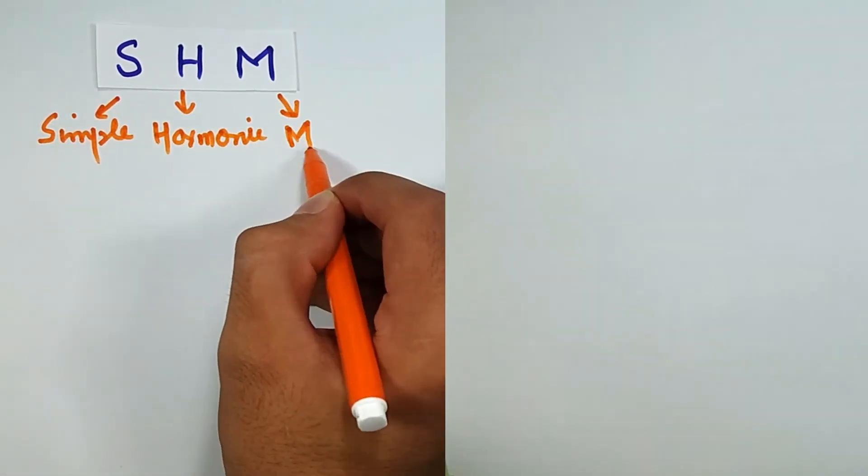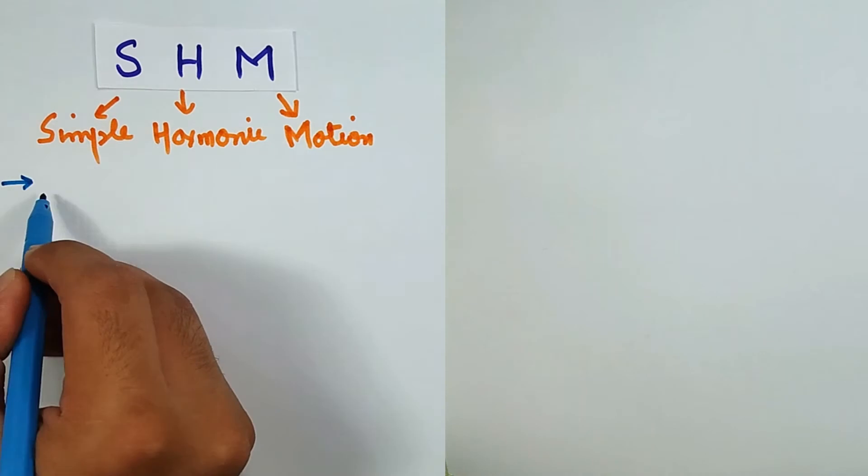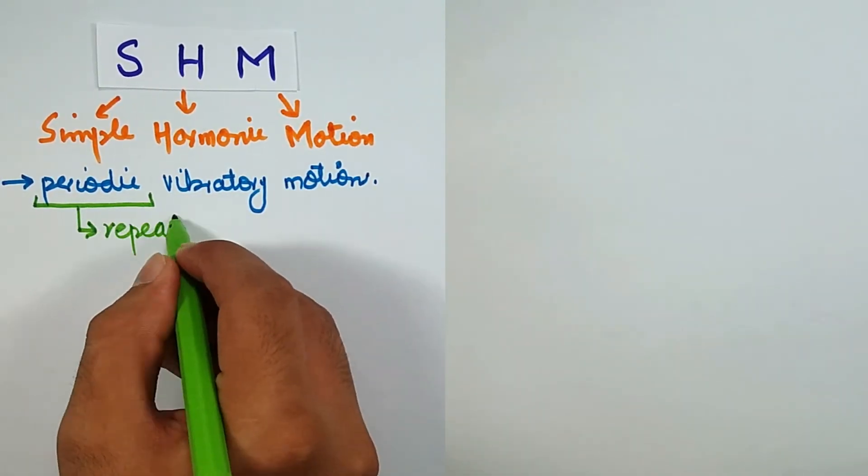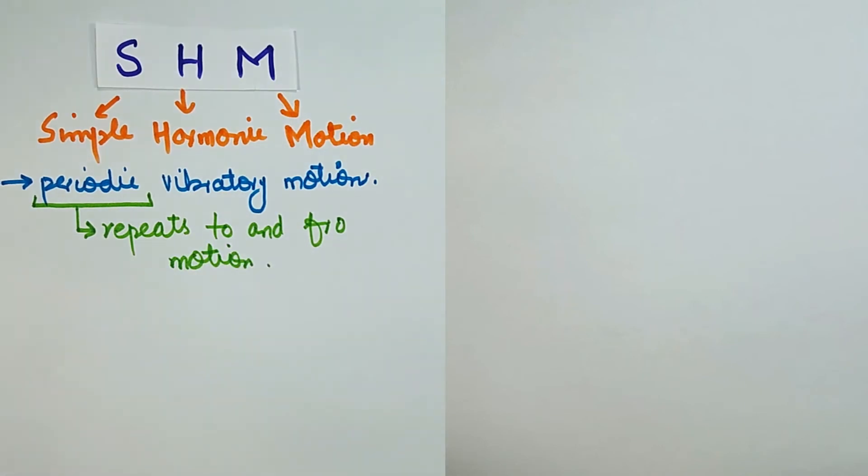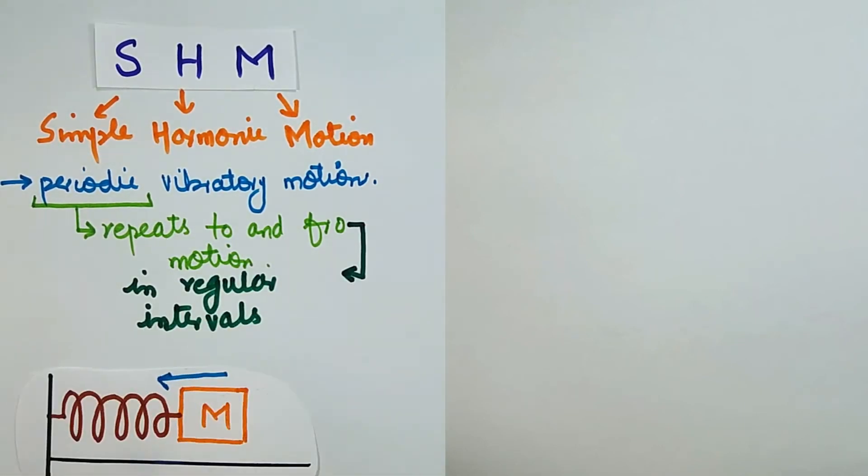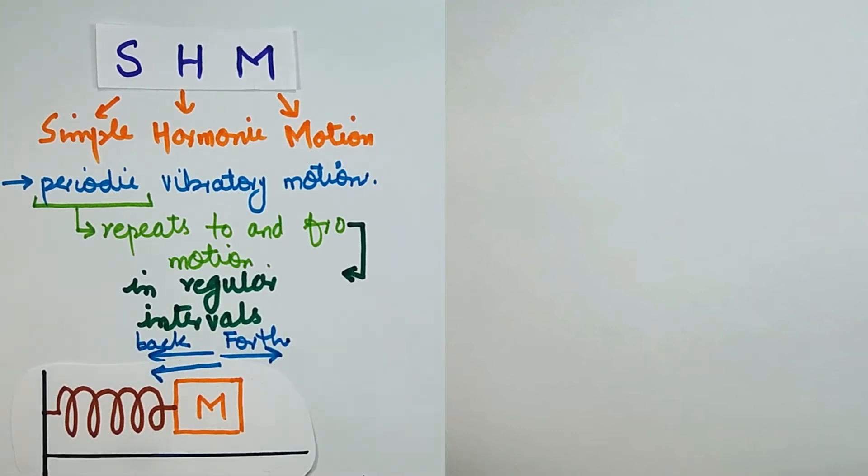Simple harmonic motion, or SHM, is periodic vibratory motion. It is periodic because it repeats its to and fro motion in regular intervals of time and continues to occur as long as the system is ideal, which means that no drag force is taken into account.